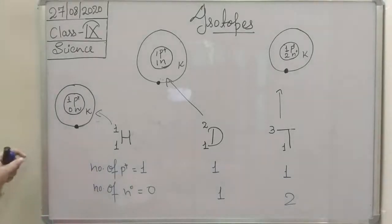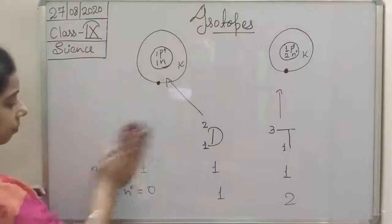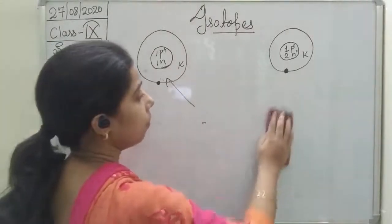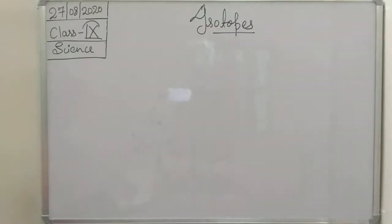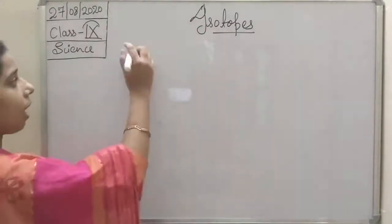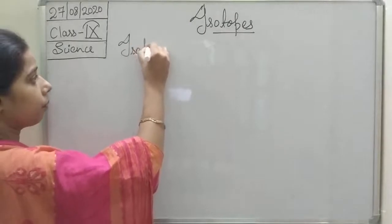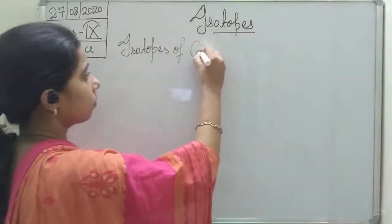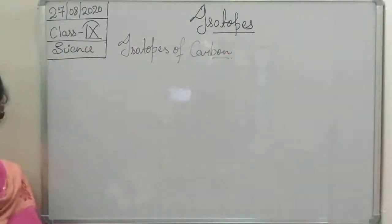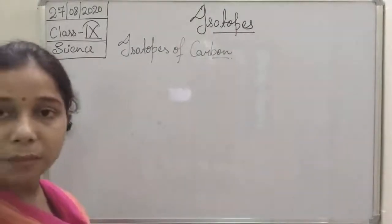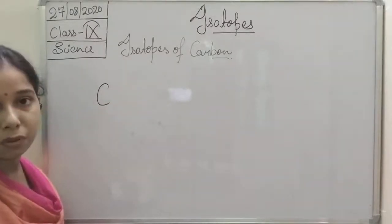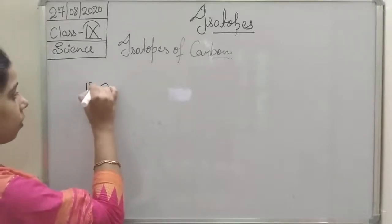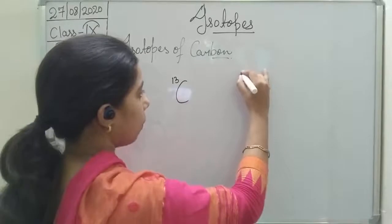Let me show some more examples of isotopes, then we will discuss the properties. There are a lot of isotopes. We will discuss the next one, and that is the isotope of carbon. Basically carbon can exist in three forms in nature: carbon-12, carbon-13, and carbon-14.